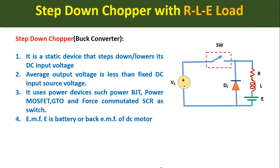Now let us see some important points related to the step-down chopper. This step-down chopper is also called as a buck converter. This is the circuit diagram of the step-down chopper. Here we have connected one resistor, one inductor, and one battery at the load terminals, and across the load one freewheeling diode DF is connected in the inverted position — the P side is in the downward direction and N side is in the upward direction. This SW switch is called the chopper switch. The step-down chopper is a static device that steps down or lowers its DC input voltage, therefore it is called a step-down chopper or buck converter.